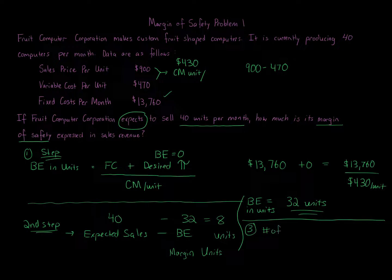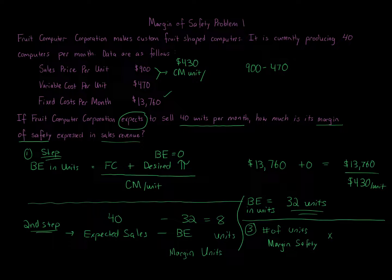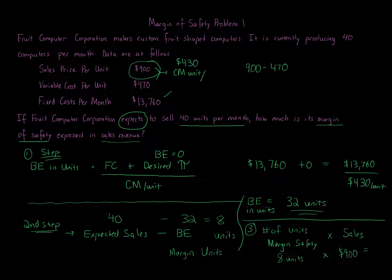Step three: since this question asks for margin of safety in sales revenue, we take the margin of safety in units and multiply it by the sales price. That's 8 units times $900 per unit, which equals $7,200.